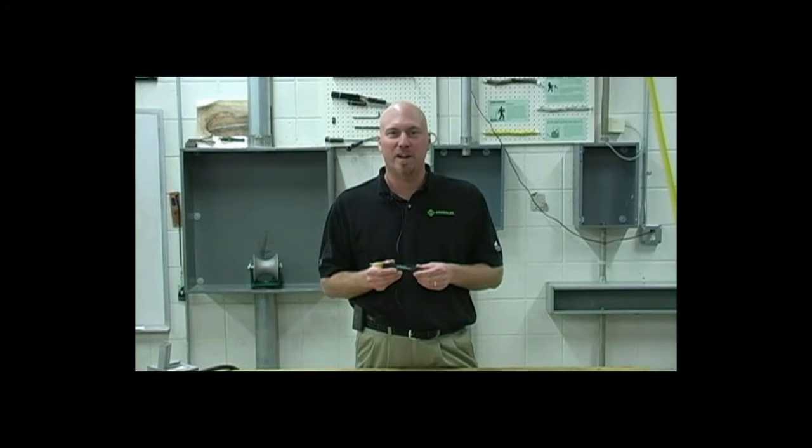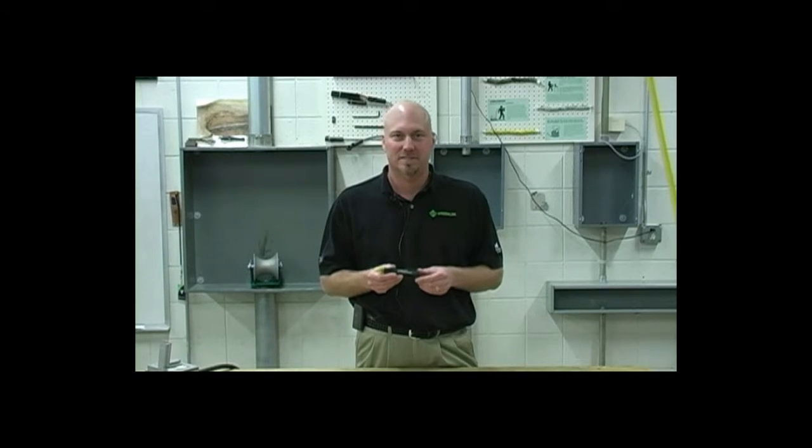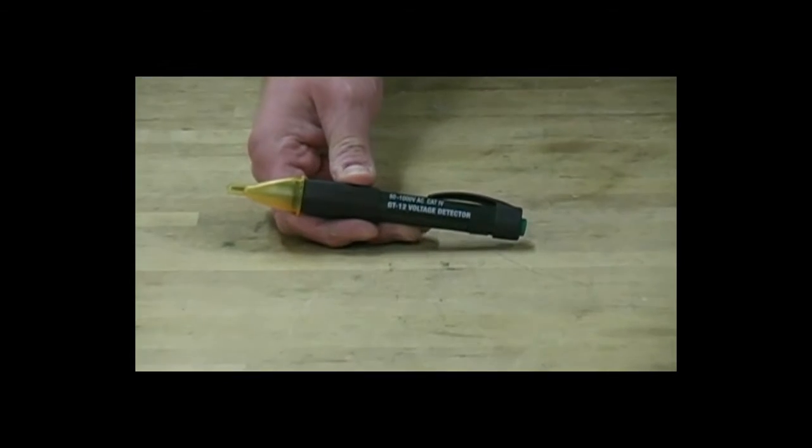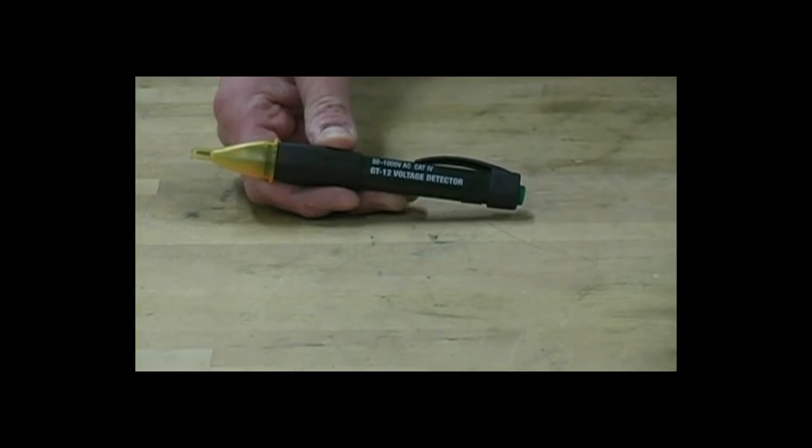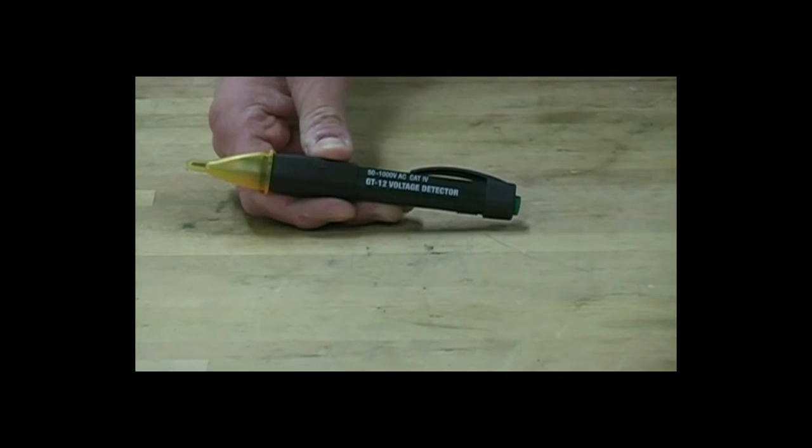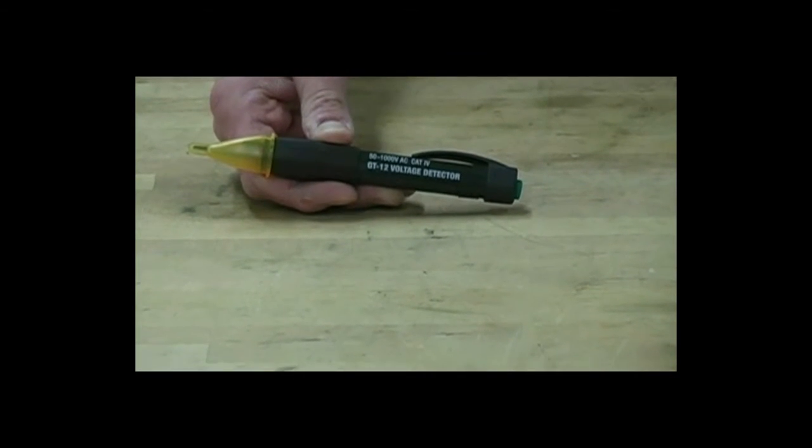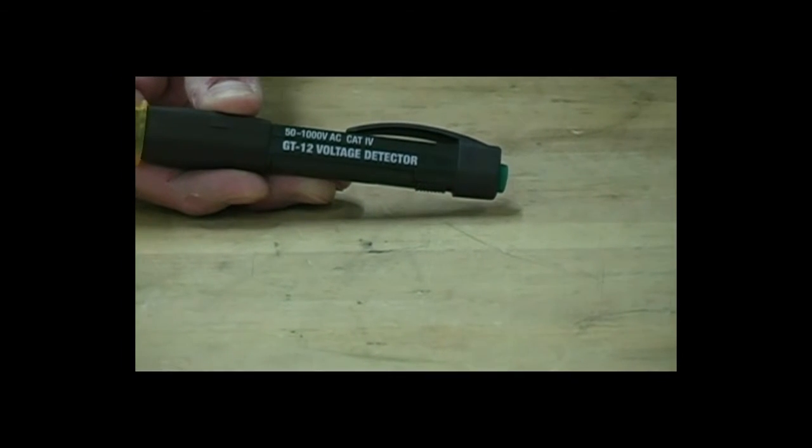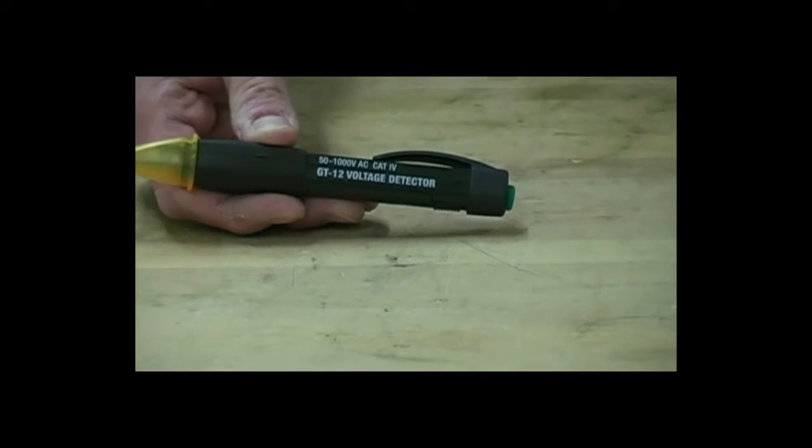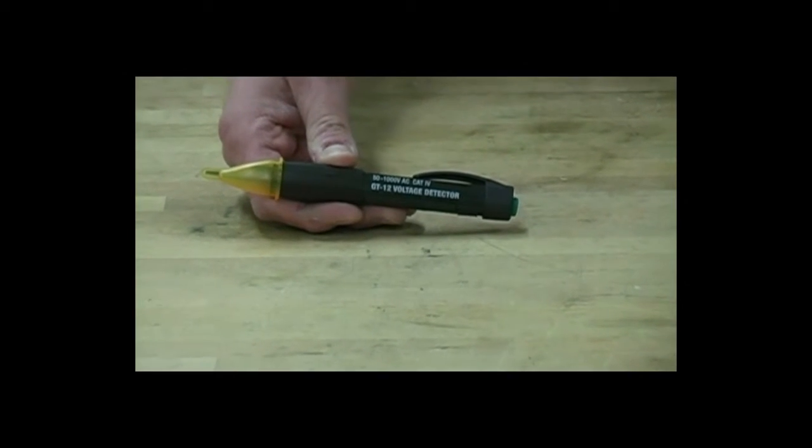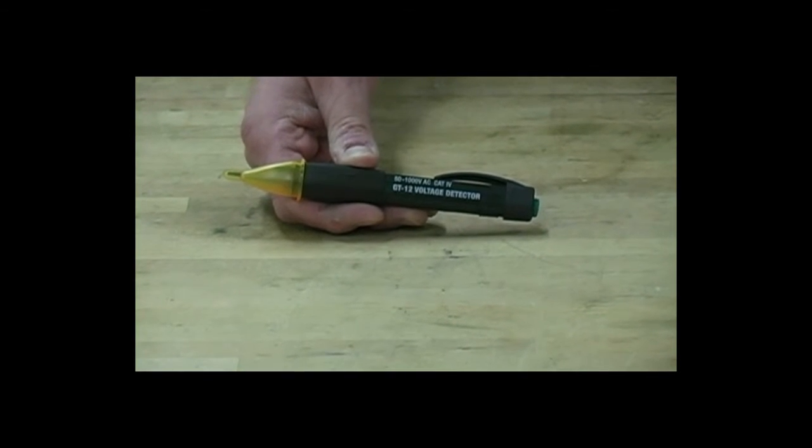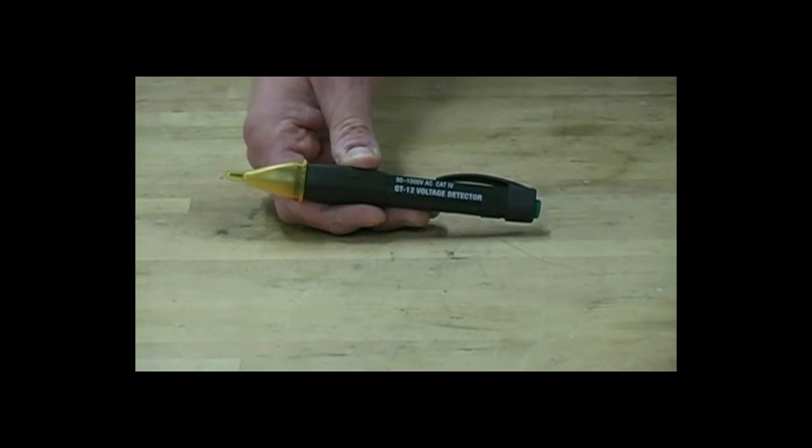The GT12 is a Category 4 1000 volt rated non-contact voltage detection tester. It is intended to check for the presence of AC voltage, signaling the user with an intermittent tone and flashing LED. The tone can be disabled using the smart on-off button. The GT12 has a self-test feature that continuously tests the integrity of the entire unit, including the antenna. The GT12 also features low battery indication and an auto power-off feature.